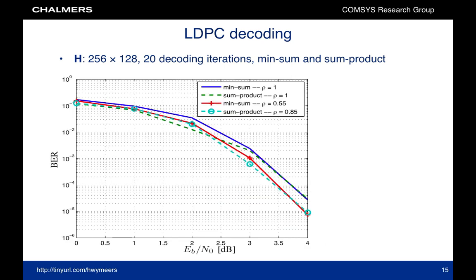This figure shows the bit error rate as a function of the signal-to-noise ratio for BP and uniformly-weighted BP. The top two curves correspond to rho equal to 1 and the bottom two curves correspond to rho less than 1. We observe a small but non-negligible performance gain.